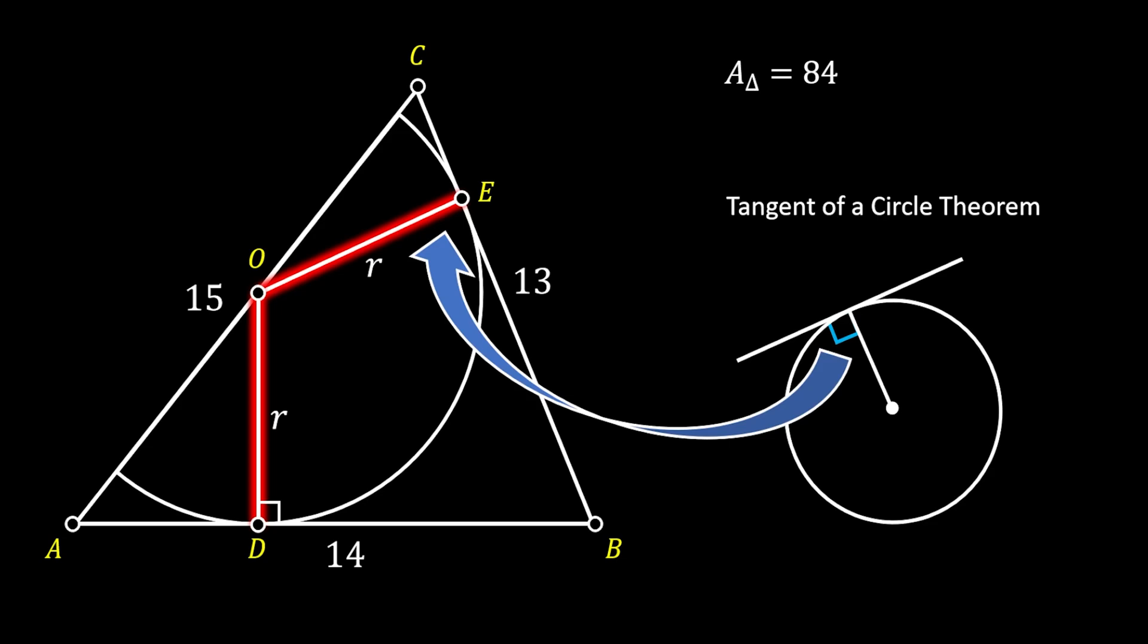Since the line CB is a tangent to our half circle, that means that the angle at the point E will also be 90 degree angle.